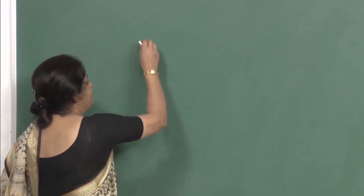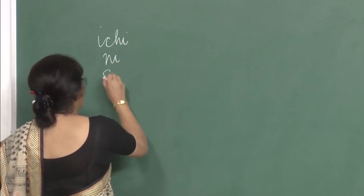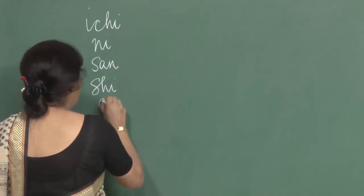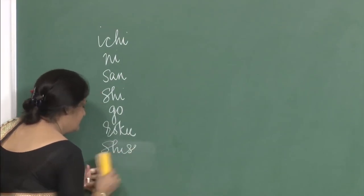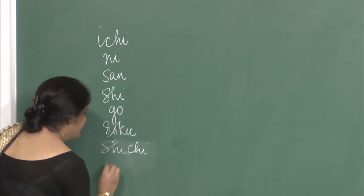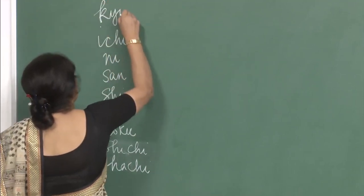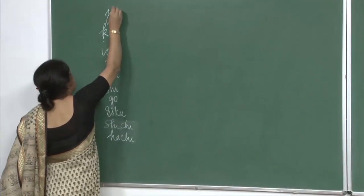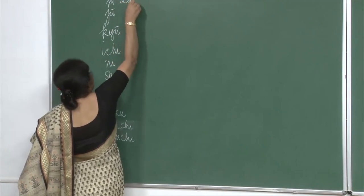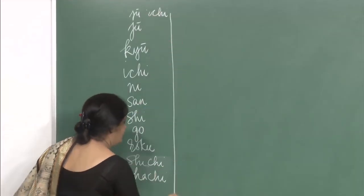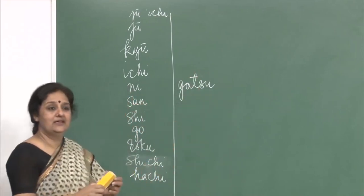Before that, I want you to know your months — January, February till December. It is very simple in Japanese. It is numbers: ichi, ni, san, shi, go, roku, shichi, hachi, ku, juu, juu ichi. After this you just need to put gatsu. The counter for month is gatsu.